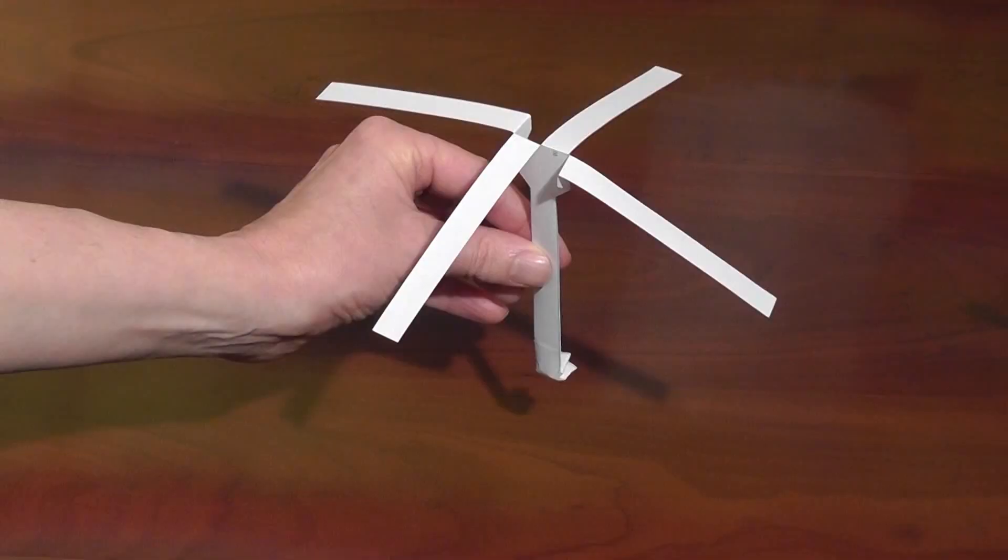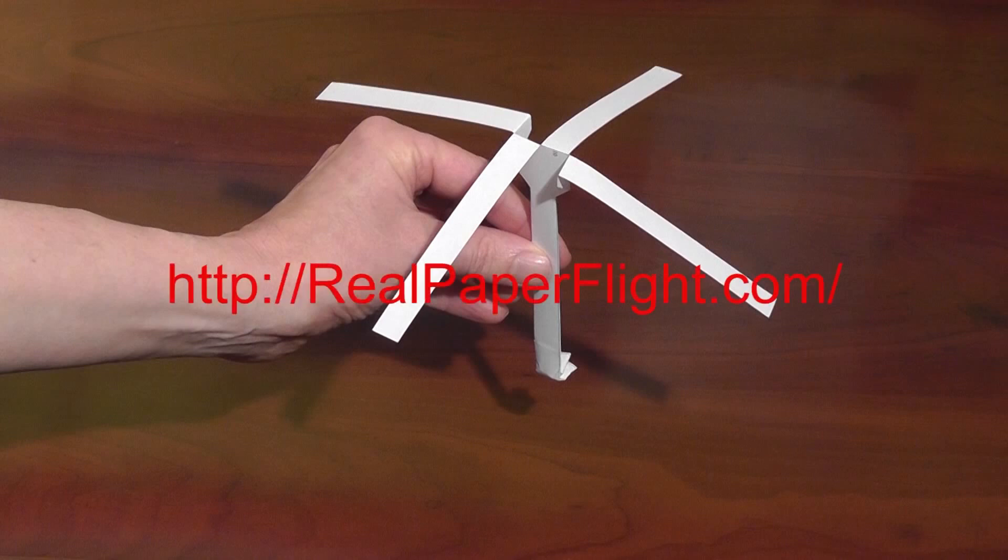This four-bladed version of the Whirlybird is just cut and folded with no tape. I'll put the plans on my website at realpaperflight.com and make a video about how to make it.